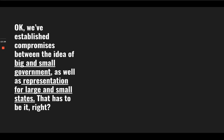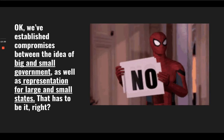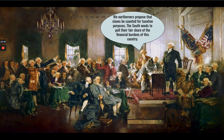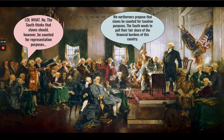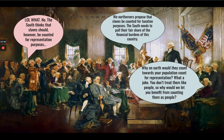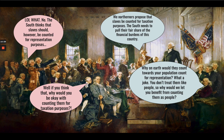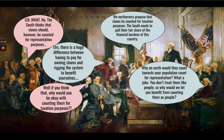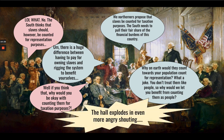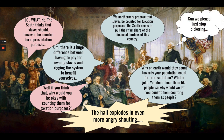But we've established compromises between big and small government, and representation for small and large states — that still isn't everything. In another dramatized debate: northerners propose that slaves be counted for taxation purposes so the South pays its fair share. But the South wants slaves counted for representation purposes to increase their population count in Congress. The North pushes back: you don't treat them like people, so why benefit from counting them as people? The hall explodes in even more angry shouting.